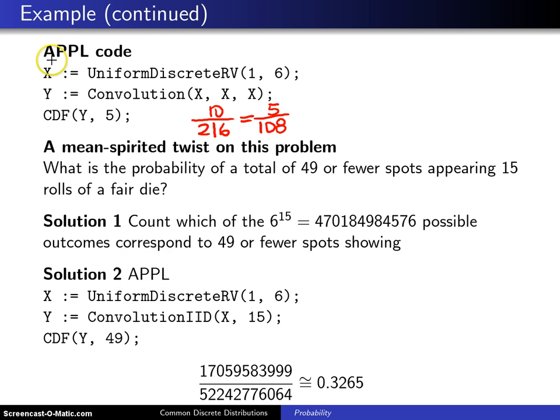If you simply take this code and replace our three rolls by 15 rolls, and instead of evaluating the CDF at five evaluate it at 49, this all works out to 0.3265, and here is the answer as an exact fraction in lowest terms.